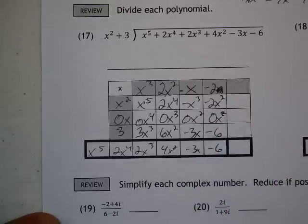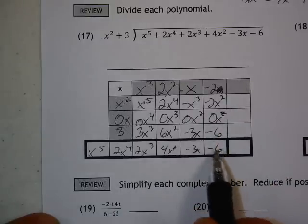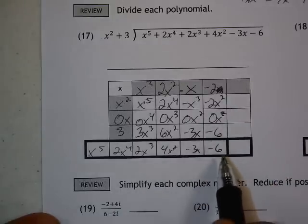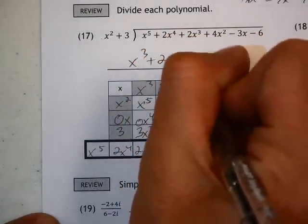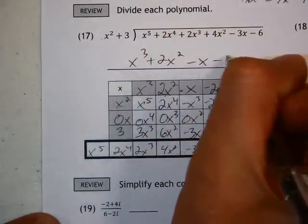And notice, I don't need this last one. There's no remainder because the negative 6 matches, so it divides evenly. So, my answer is x cubed plus 2x squared minus x minus 2.